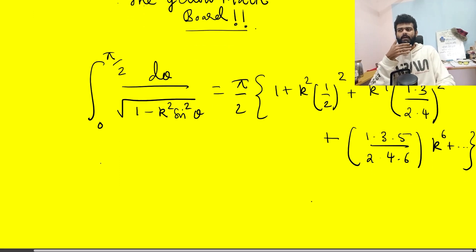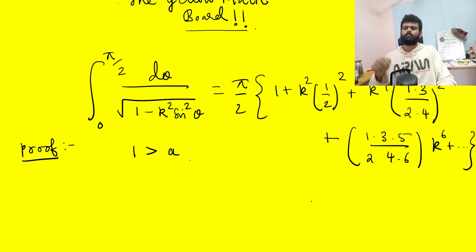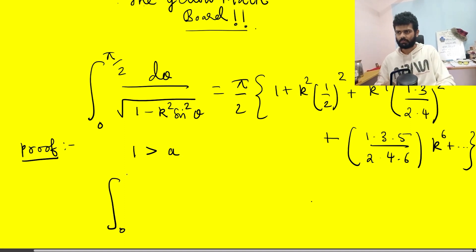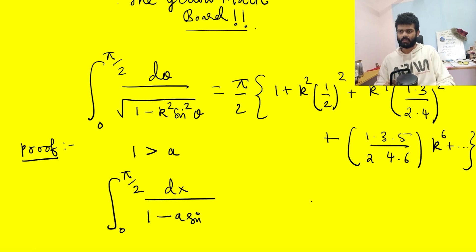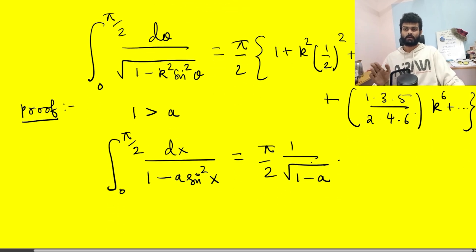Before proving that, I'm going to evaluate an auxiliary integral. The proof begins: if you pick a number a less than 1, then the integral from 0 to π/2 of dx divided by (1 − a sin²x) equals π/2 times 1 over the square root of (1 − a).